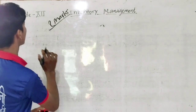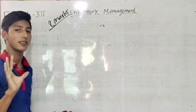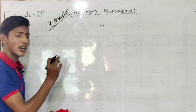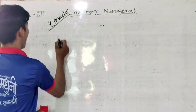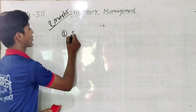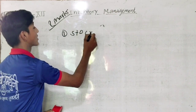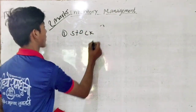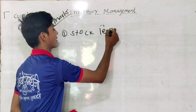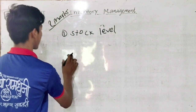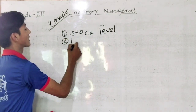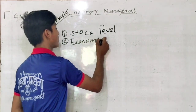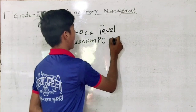Two max is one very important chapter. You will do the same thing. You will not skip the video. Stock level is under inventory management. Economic order quantity — economic order quantity is also important.